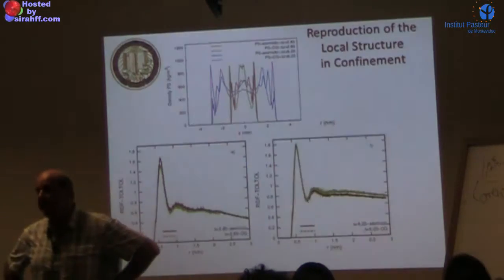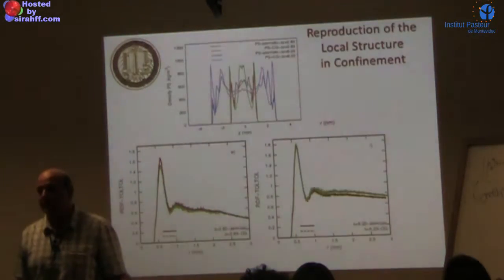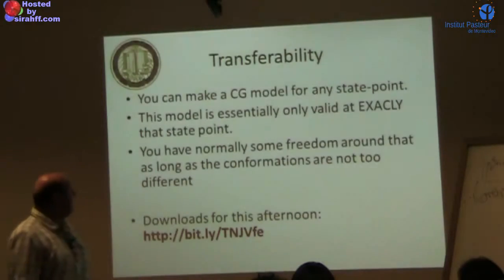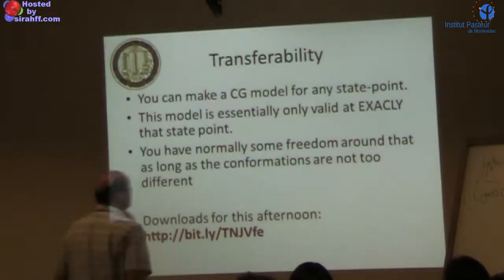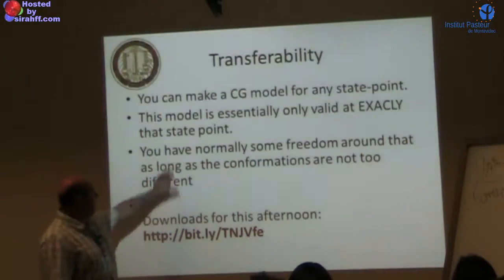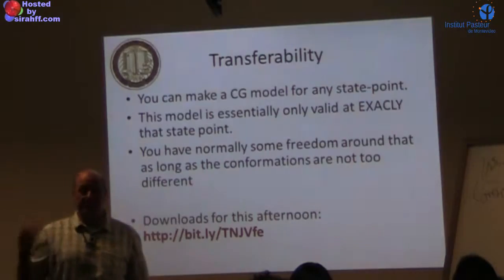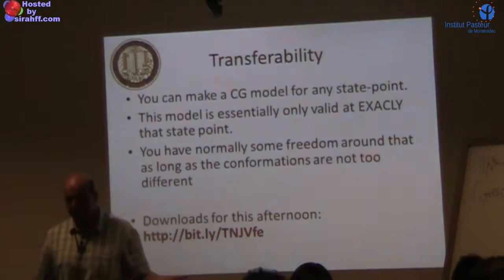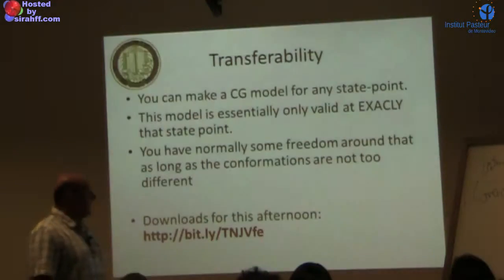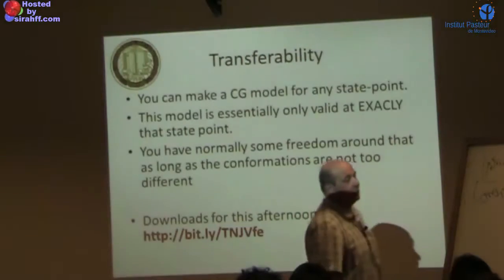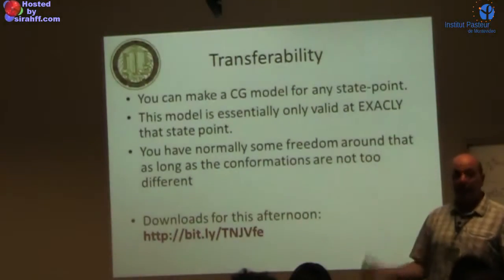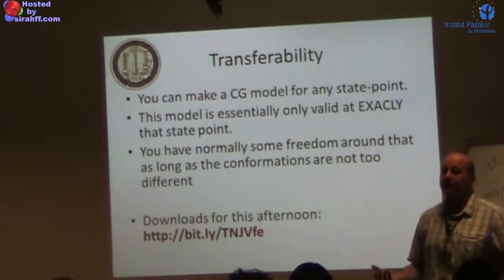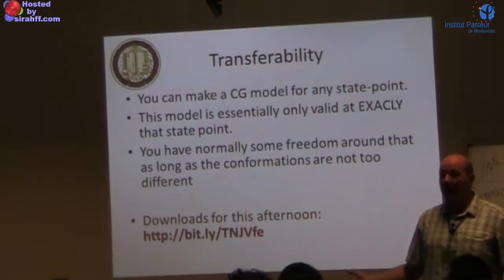You could introduce a position-dependent potential — that's something that would probably have to be done, though we haven't implemented it yet. The core issue is that we can make a CG model for any single state point, but that model is only valid at exactly that state point. You have some freedom around it — we saw a few tens of Kelvin for temperature and some range for concentration — as long as conformations from one state point to another are not too different. For confinement, different families of polymers at the surface and in the bulk coexist simultaneously, and that will not work with a single CG model.